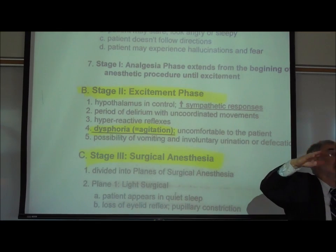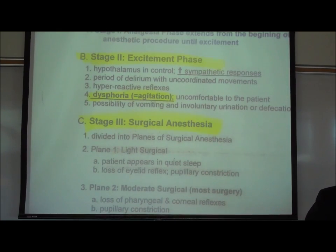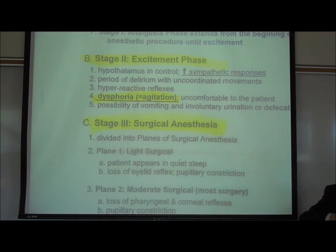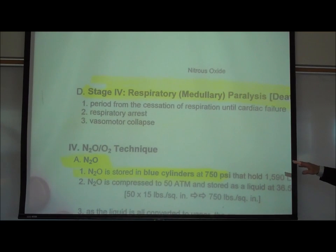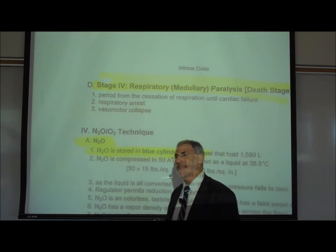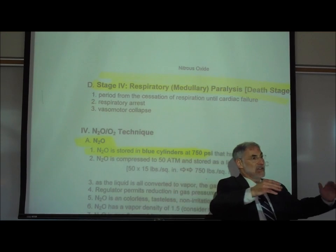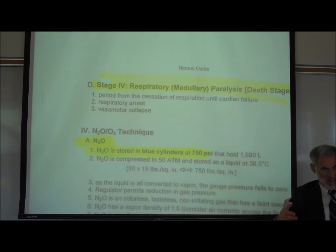The excitement phase doesn't last very long, because as you give more you rapidly go into stage three — the stage of surgical anesthesia, used for real surgery, with general anesthesia and loss of all sensation. On page R4, the fourth and final stage is the stage of respiratory paralysis or death. Other general anesthetics can depress the brain enough to cause coma and death, though that's deeper than the stage used for surgery.